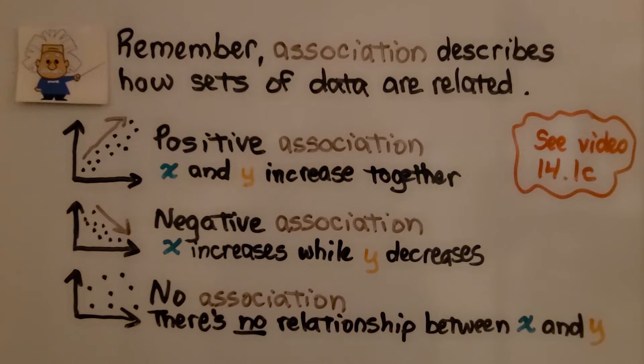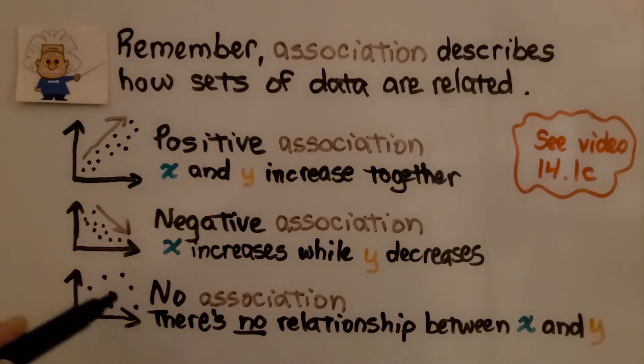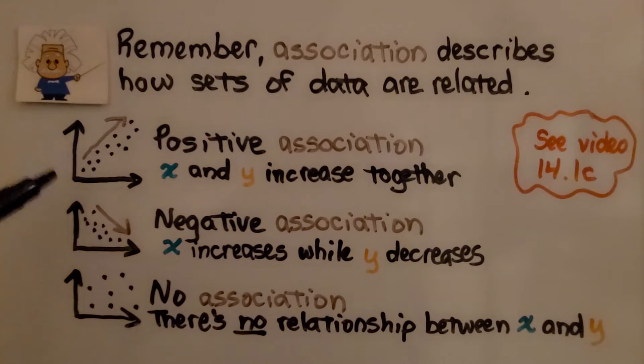Remember, association describes how sets of data are related. If it's a positive association, x and y increase together. If it's a negative association, x increases while y decreases. If there's no association, there's no relationship between x and y. They're scattered all over the place. We don't see a line here as we do for positive or negative association.